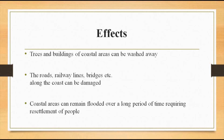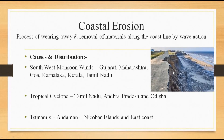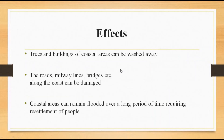The effects of coastal erosion include trees and buildings of the coastal area being washed away and merged into the sea. Roads, railway lines, bridges, etc. along the coast can be damaged by sea waves. Coastal areas can remain flooded over a long period, and a long period of time is required for resettlement of the people there, because of how much damage it creates.